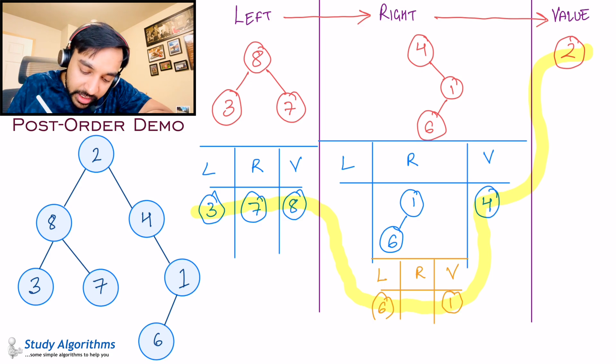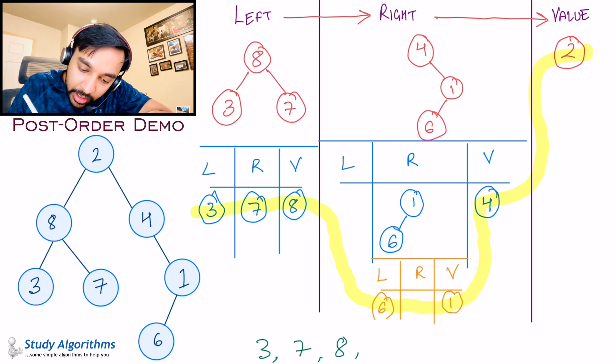Writing this in simple terms, the post-order traversal result is: 3, 7, 8, 6, 1, 4, and 2. Now let us do a dry run of the code and see how this is actually working in action.